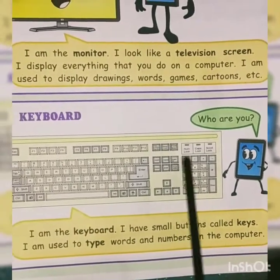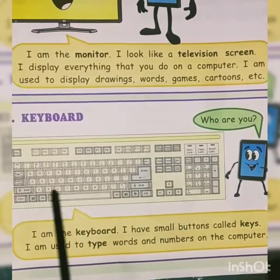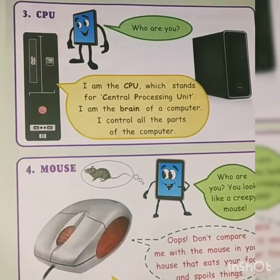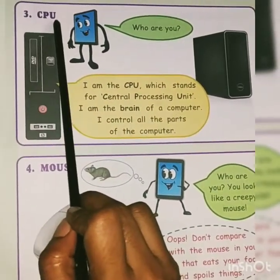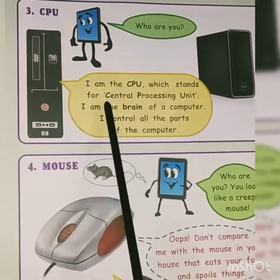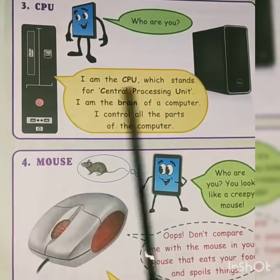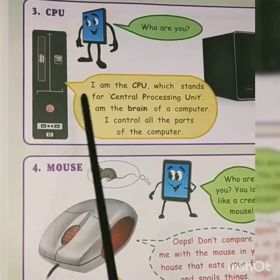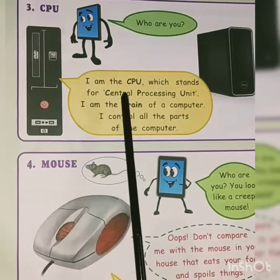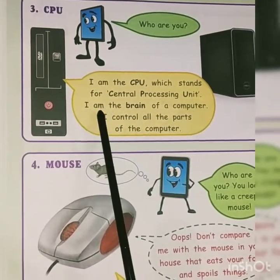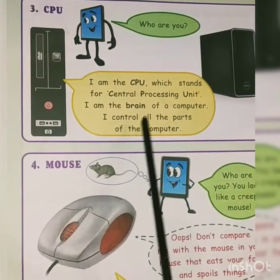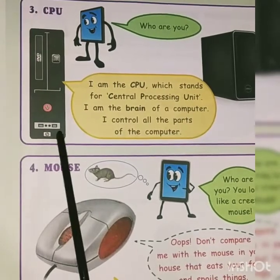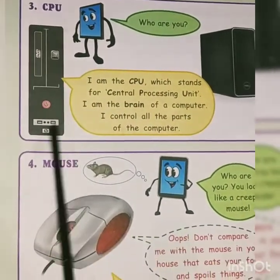With the help of the keys we can type words or numbers on a computer. You can see numbers written here and all the alphabets are written here too. The next part of the computer is the CPU. CPU is a short form — the full form is Central Processing Unit. The CPU introduces itself: I am a CPU, which stands for Central Processing Unit. I am the brain of a computer. I control all the parts of the computer, just like our brain controls our body.